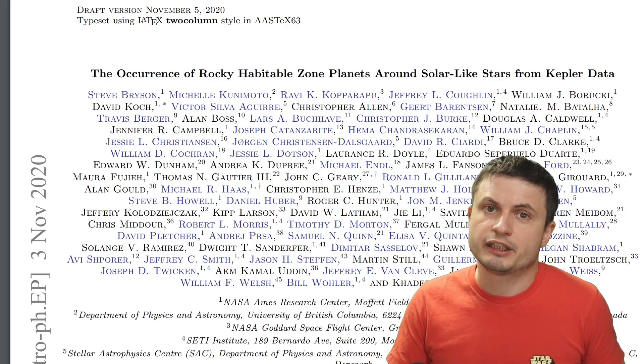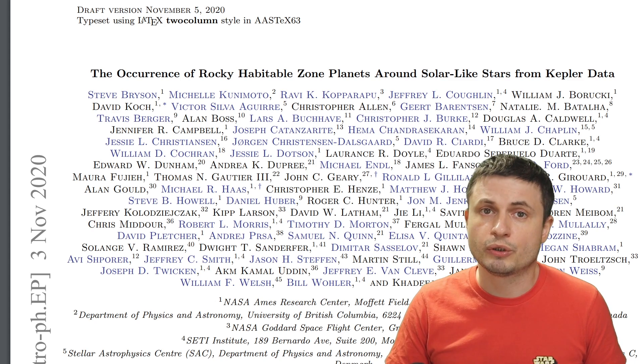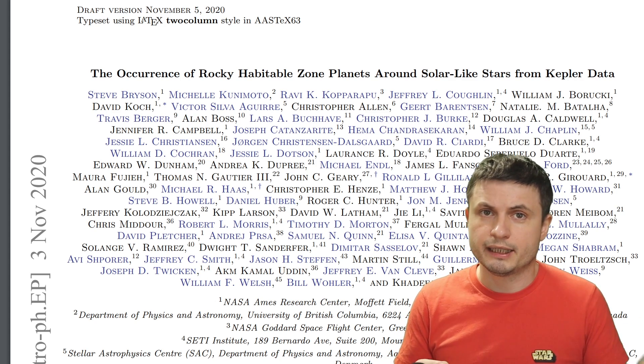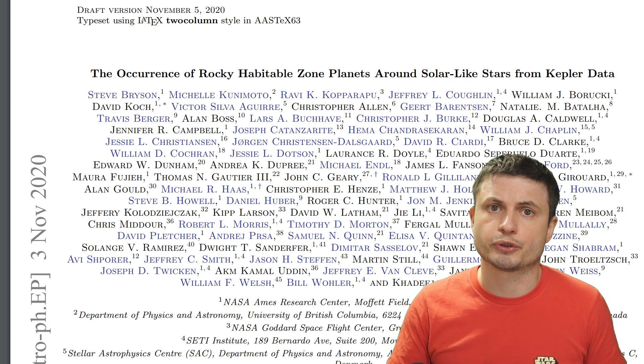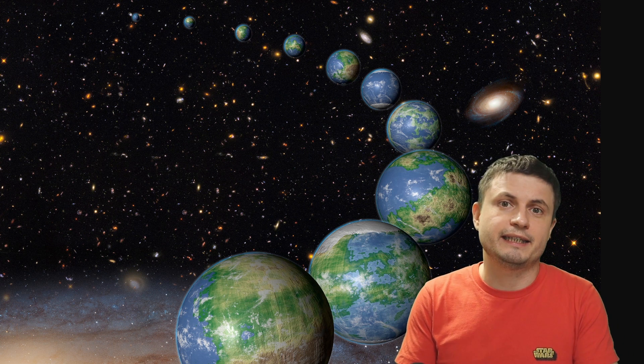And so the scientists behind the paper you can find in the description below combine the data from Gaia telescope with the data from Kepler telescope to create a relatively accurate estimate for how many possible habitable planets we'll be able to discover if we were to look at the entire galaxy.